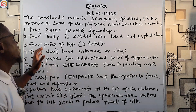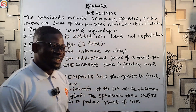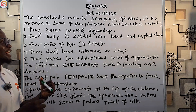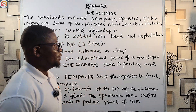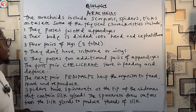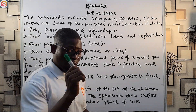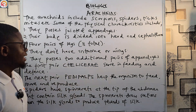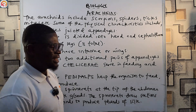First, arachnids possess jointed appendages. Second, their body is divided into the head and the cephalothorax. Third, they have four pairs of legs — four times two equals eight — so they have eight legs in total.